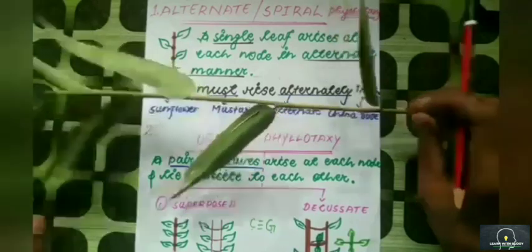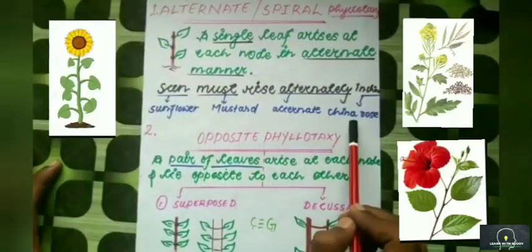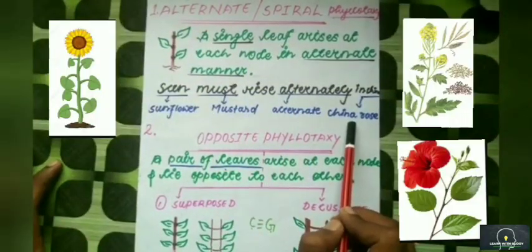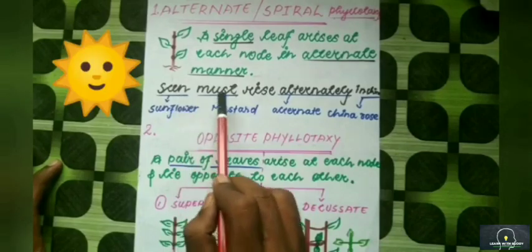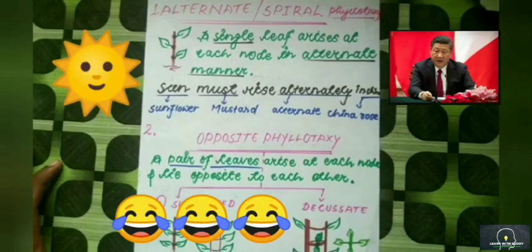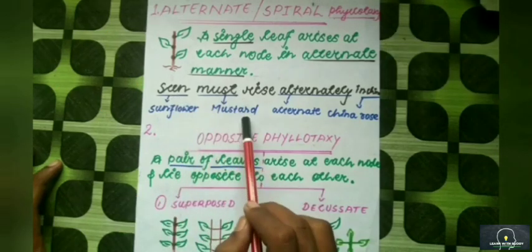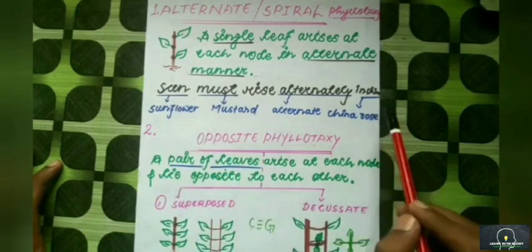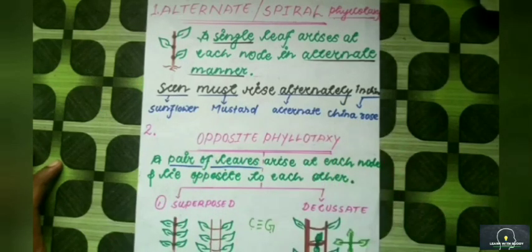Examples of alternate phyllotaxy are sunflower, mustard, and china rose. To remember them, use the mnemonic: 'Sun must rise alternately in China.' Sun for sunflower, must for mustard, China for china rose, and alternately for alternate phyllotaxy.